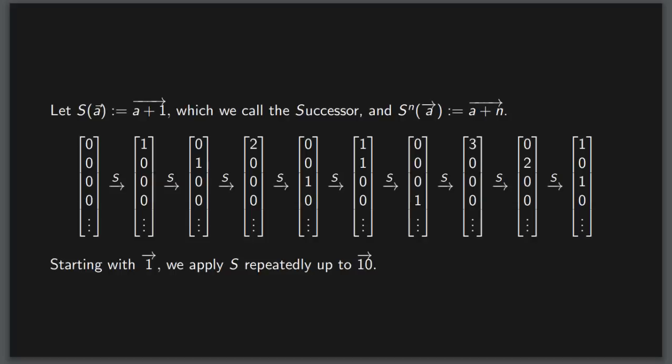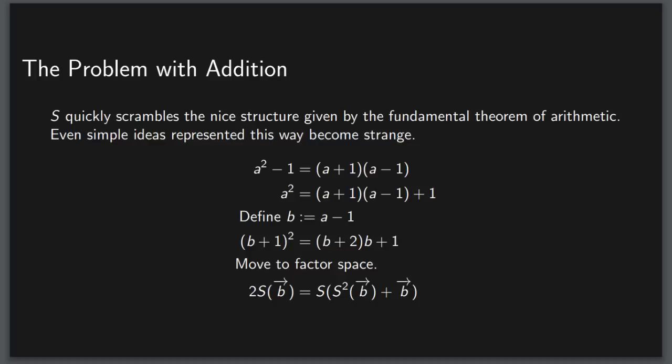Perhaps the simplest map that does not respect this structure is the successor function, which simply adds one to the original number. By adding one, we completely change the factorization each time, resulting in this mess of a map as we see by applying it to the integers 1 through 10. s does a really good job at scrambling our vectors.